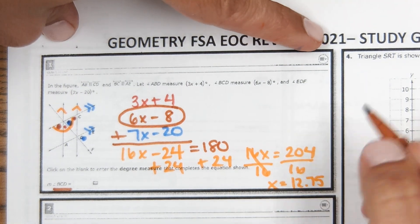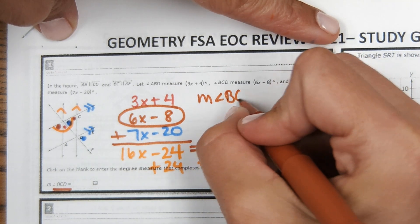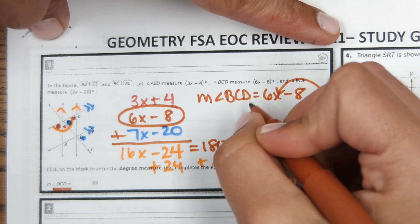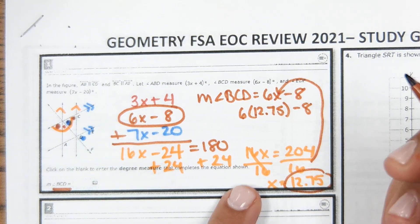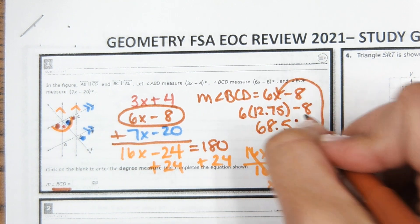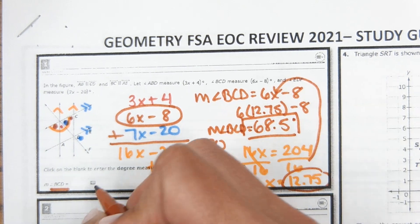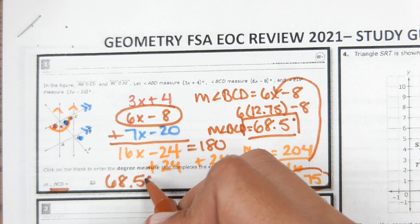With x equals 12.75, we find the measure of angle BCD which is 6x minus 8. Plugging in: 6 times 12.75 minus 8 equals 68.5 degrees. Note: you would just type 68.5, not degrees.